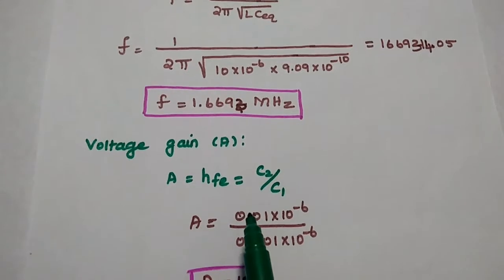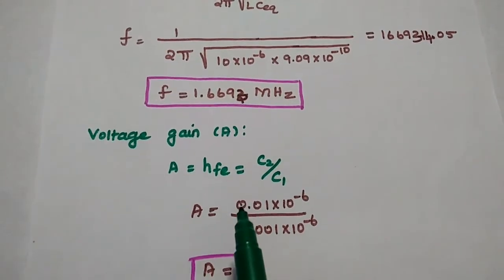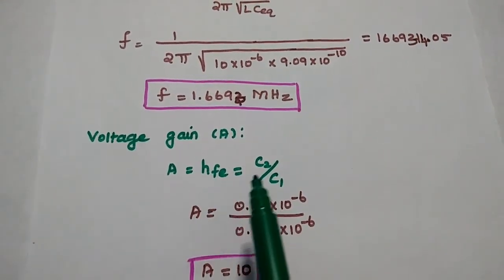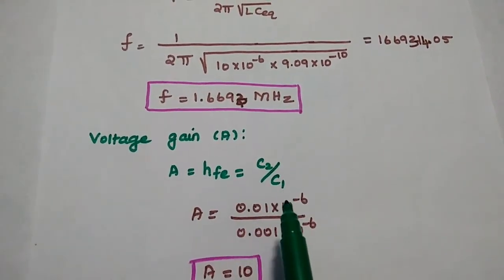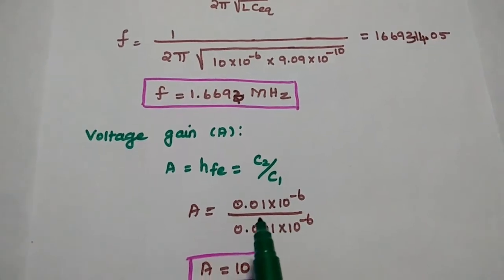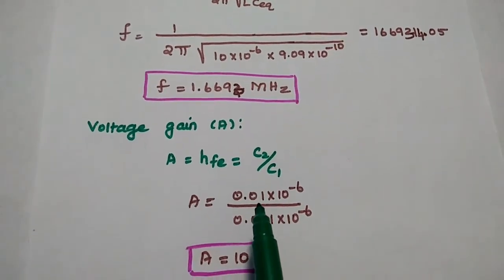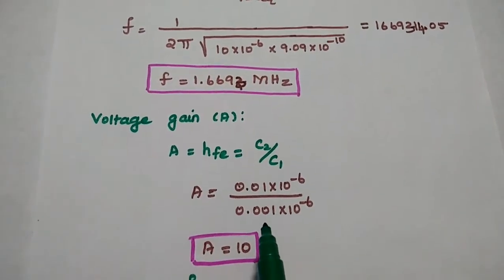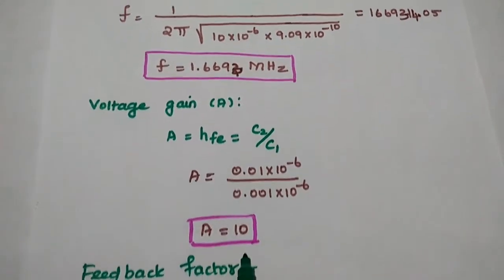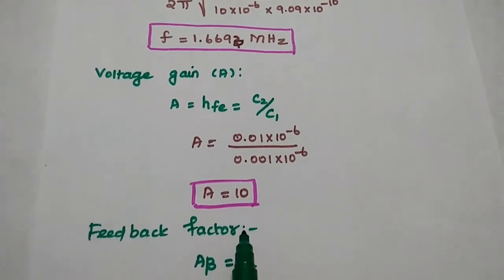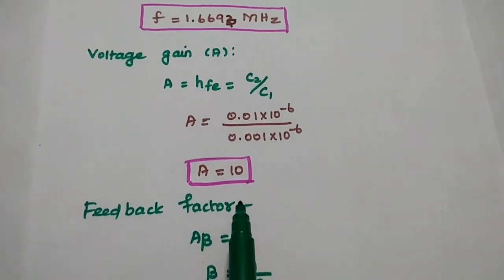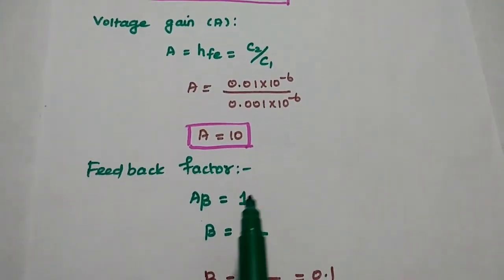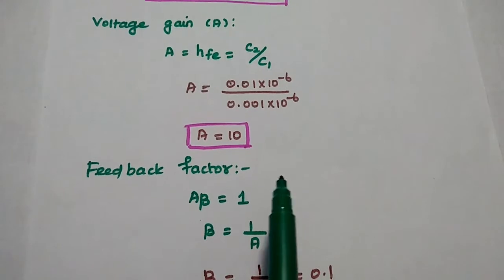Next we are going to find out the voltage gain A. A is equal to hFE, which equals C2 / C1. Substituting the values of C2 and C1, we get the answer as 10. So the voltage gain of the given Colpitts oscillator is 10.